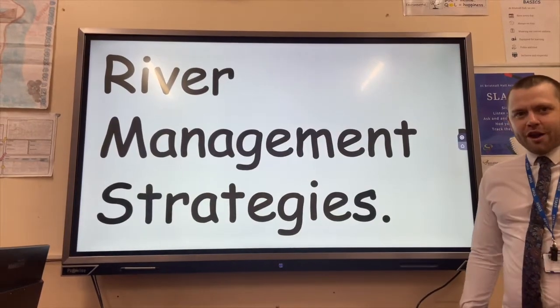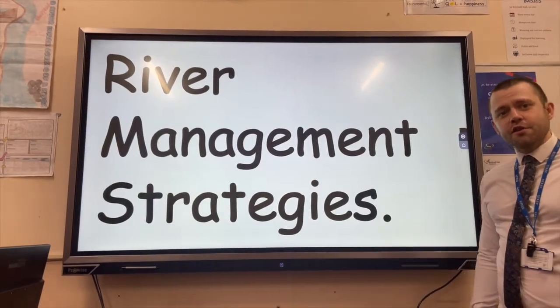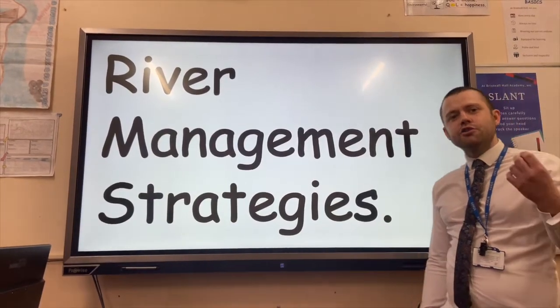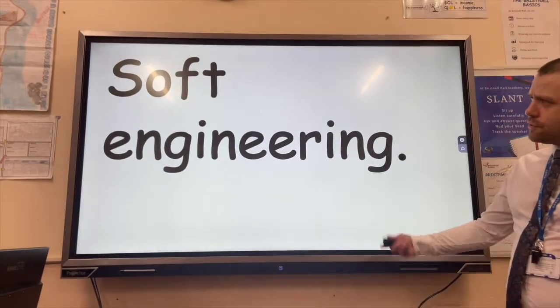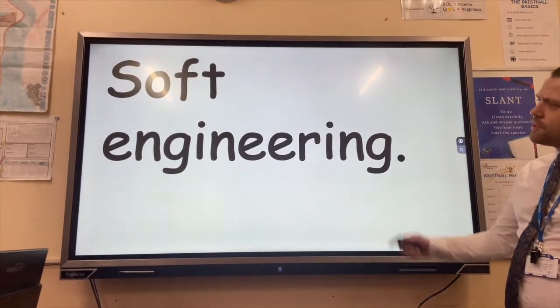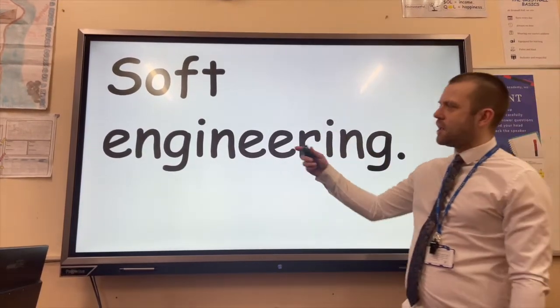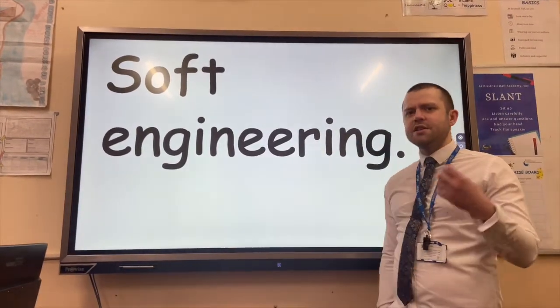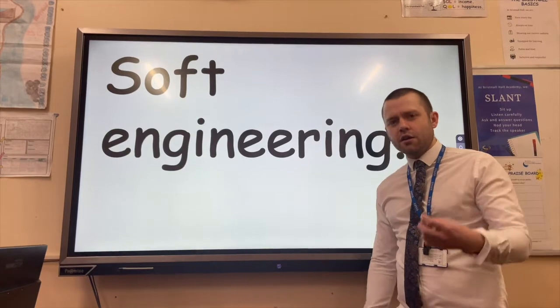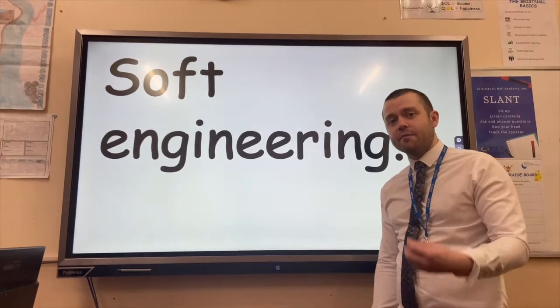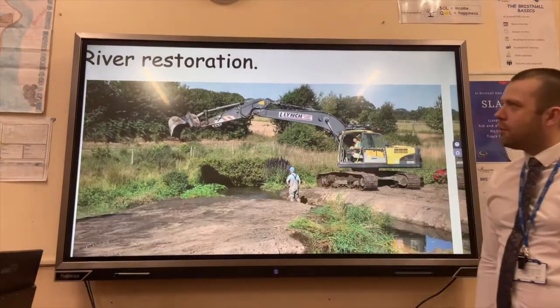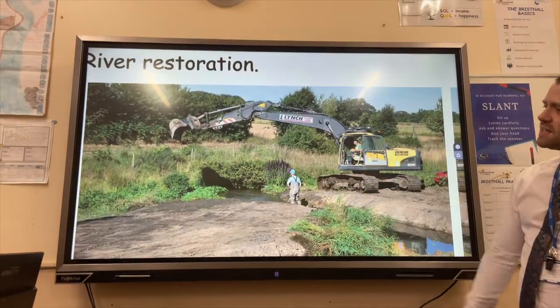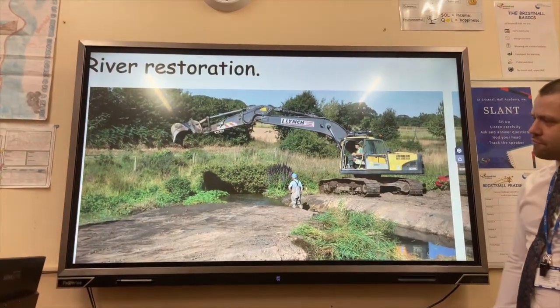River management strategies. Rivers in the UK are managed to reduce the risk of flooding. There are two types of river management, the first being soft engineering. This is an ecologically sensitive way of managing rivers and it works with the environment. The first example is river restoration.